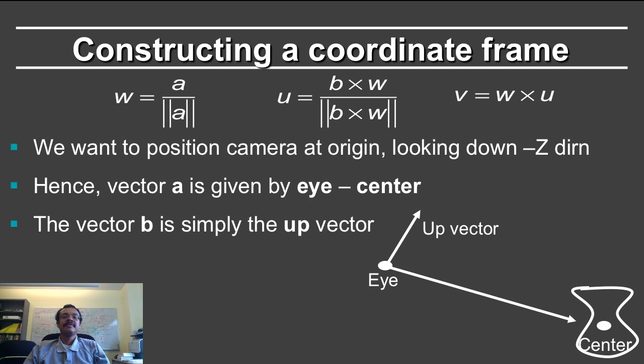In order to create the coordinate frame, you have to know what are my a and b that I'm given. I've rewritten what w, u and v are here, but I need to know what's a and b. Let's go back to our problem statement.